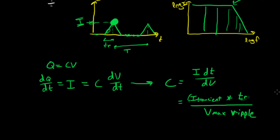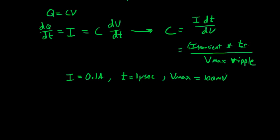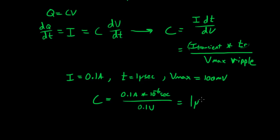For a quick example: if the data sheet shows the circuit draws 0.1 amps at a transition, the rise time is 1 microsecond, and the maximum tolerable voltage ripple is 100 millivolts, then C = 0.1 A × 10⁻⁶ s / 0.1 V = 1 microfarad. So you would need at least 1 microfarad of capacitance to decouple your integrated circuit from the rest of the system under those conditions.